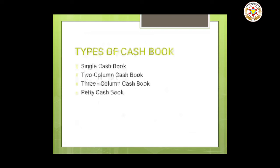Now, the types of cash book. The first is the single column cash book. The second is the two column cash book. The third is the three column cash book. And the fourth is the petty cash book.